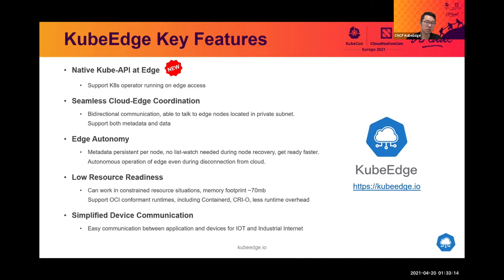To implement node autonomy, KubeEdge persists data on every node. That means even when nodes are disconnected from the cloud for a very long time, they can still recover or get ready very quickly, since no requests are needed depending on the response from the master on the cloud. KubeEdge optimized the all-in-one component in the cloud, which takes around only 70 megabytes, and also supports OCI-conformant runtimes, including containerd CRI for less runtime overhead cases.